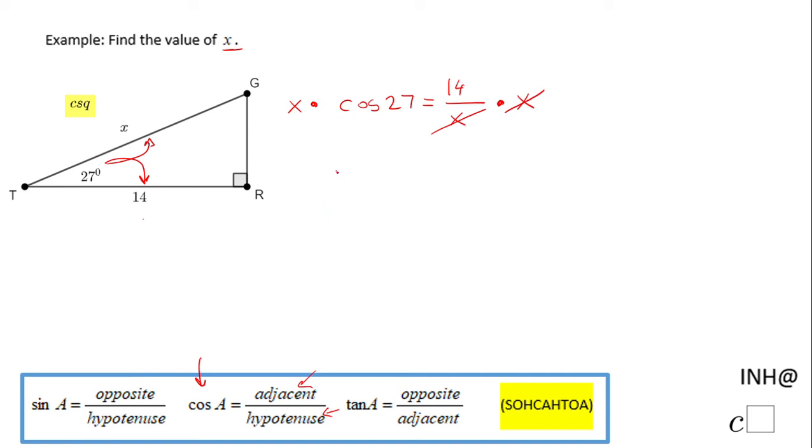And obviously now, because we want to solve for X, we want to divide by cosine of 27.